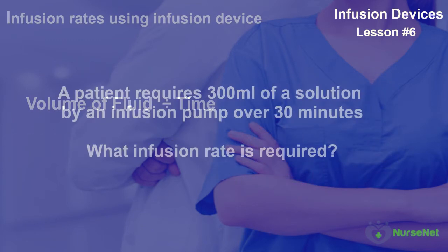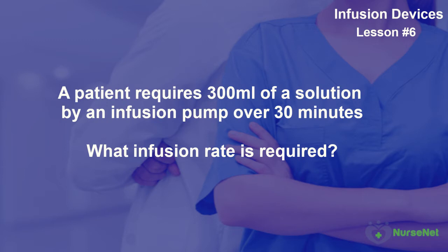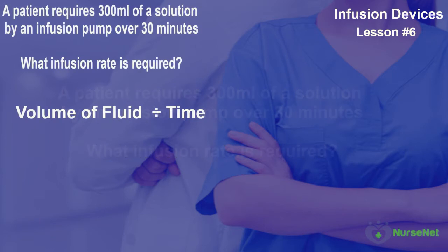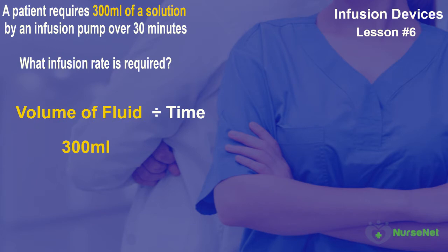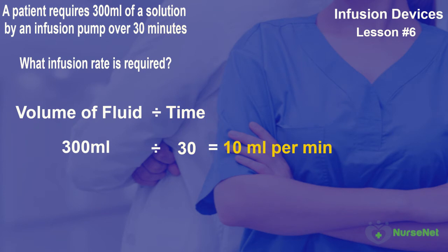So let's do an example. A patient requires 300 millilitres of a solution by an infusion pump over 30 minutes. What infusion rate is required? Using our formula of volume of fluid divided by time, we get 300 millilitres divided by 30, which gives us 10 millilitres per minute.